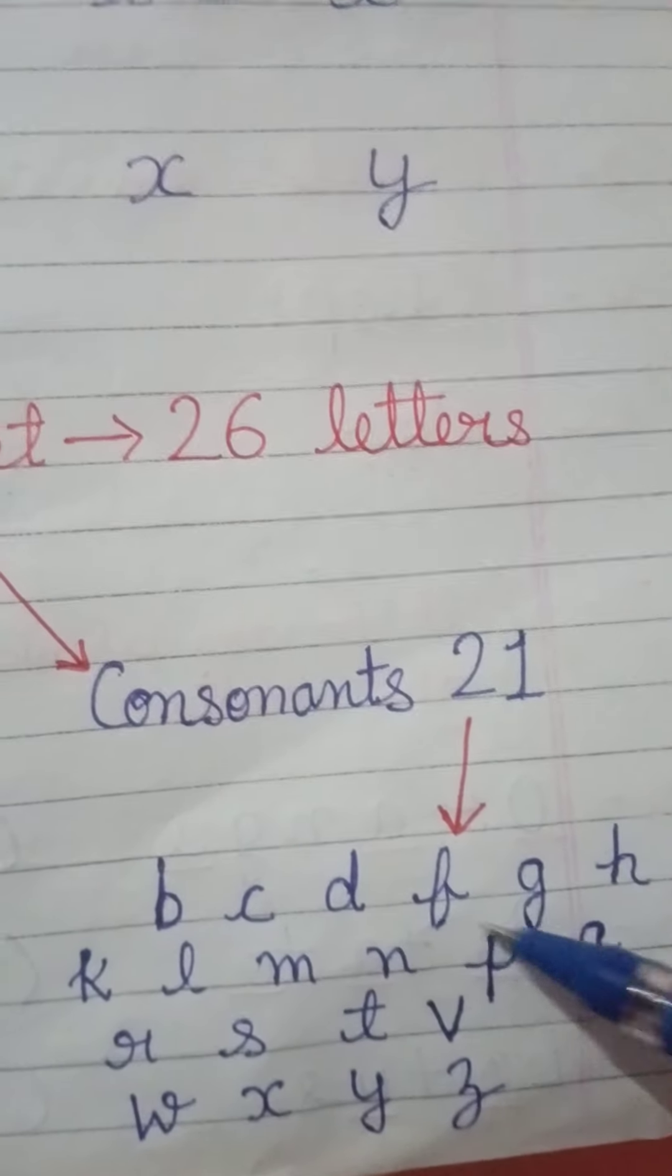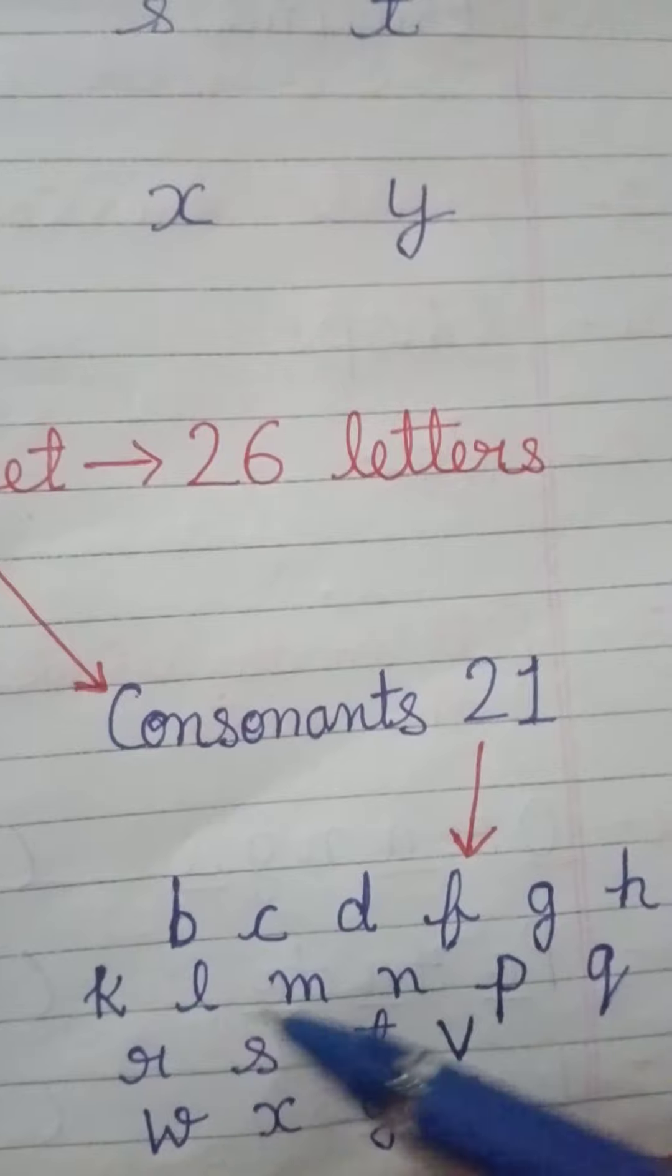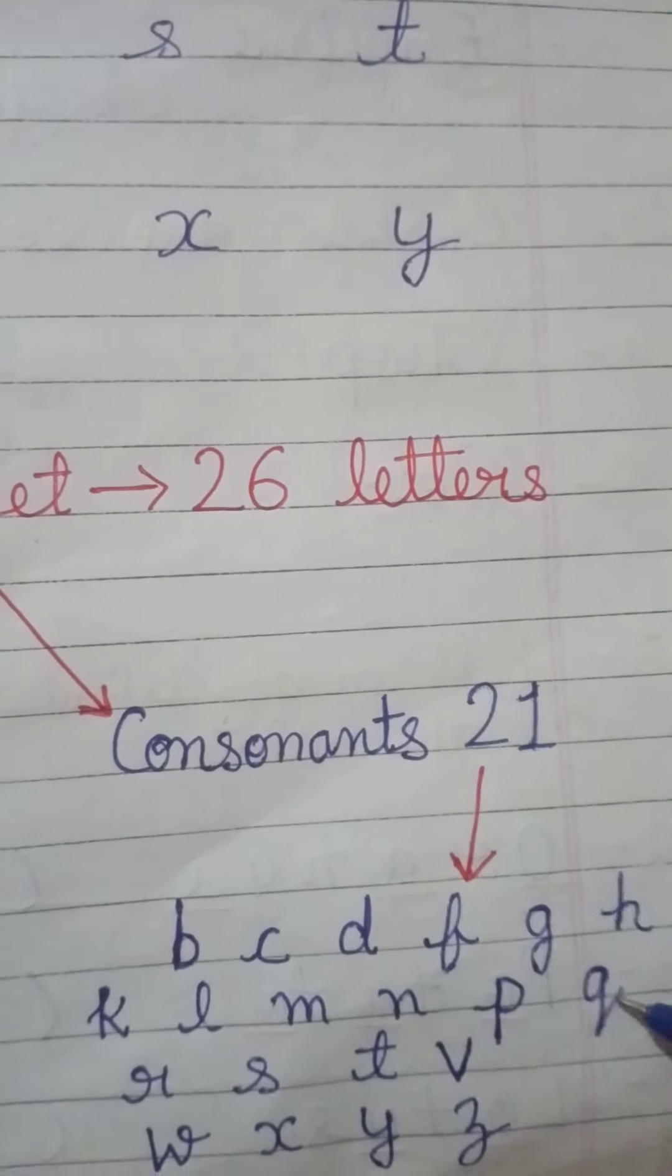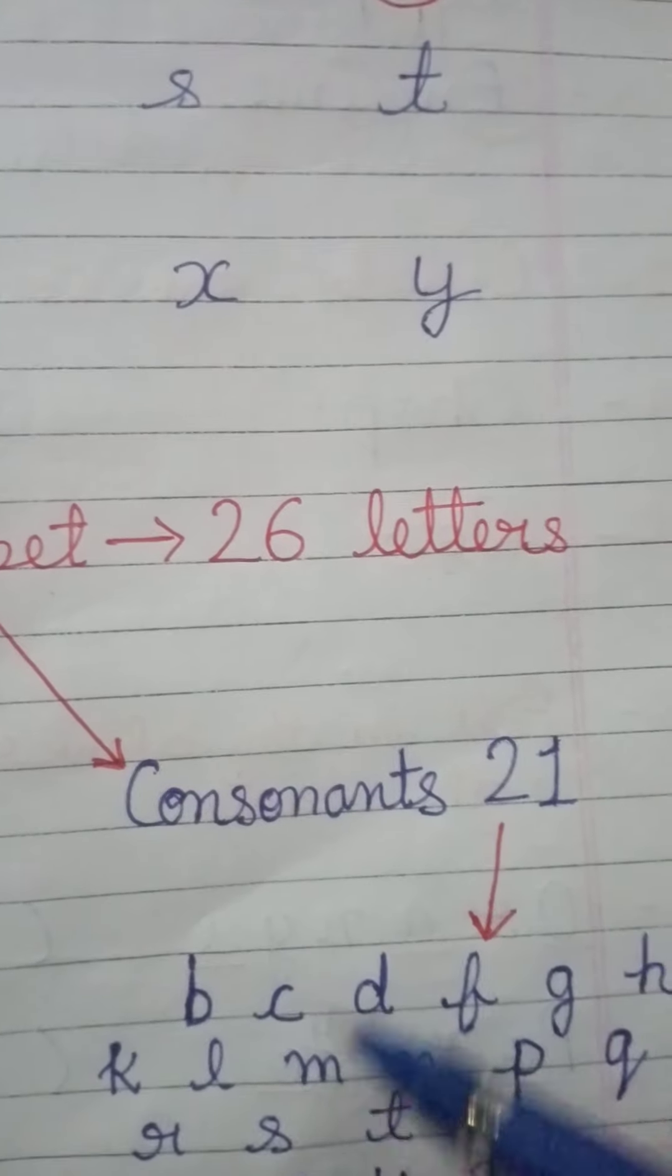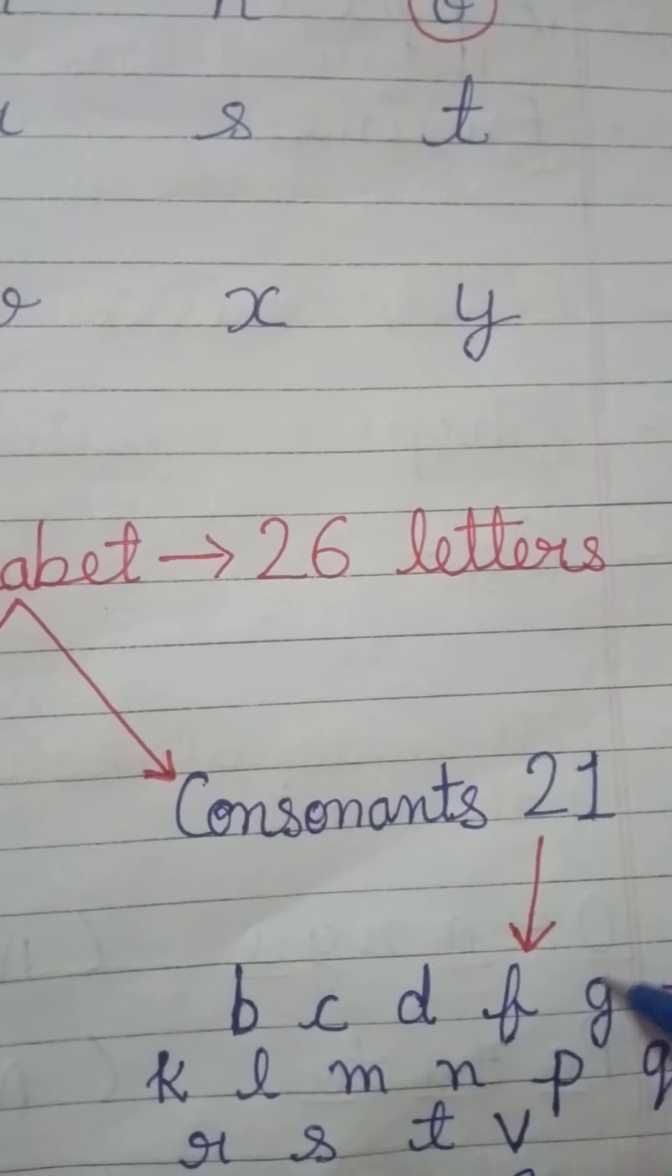B, C, D, F, G, H, J, K, L, M, N, P, Q, R, S, T, V, W, X, Y, Z. These are our remaining letters. These are called consonants.